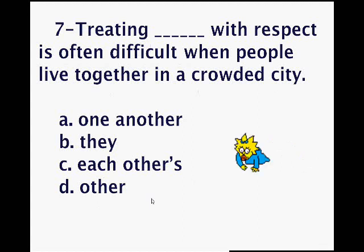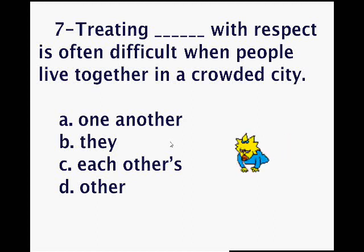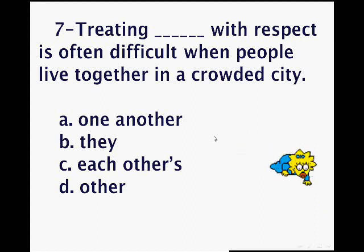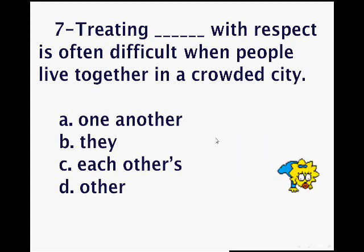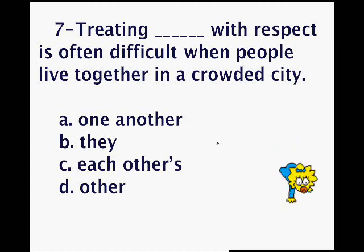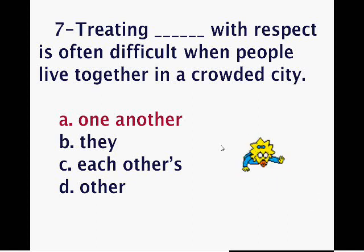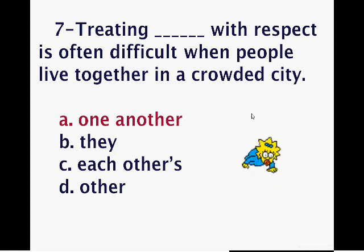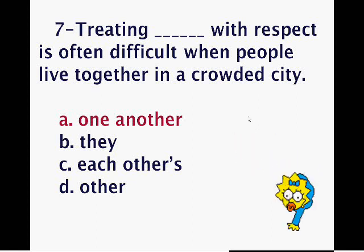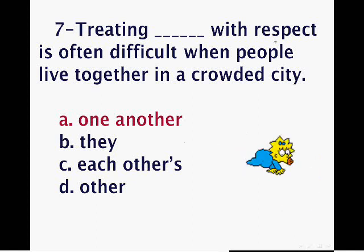Number seven: 'Treating ___ with respect is often difficult when people live together in a crowded city.' Options: a) one another, b) they, c) each other's, d) the other. The correct answer is a) one another — treating one another with respect. It's the same as each other, and we're talking about people, which is plural.